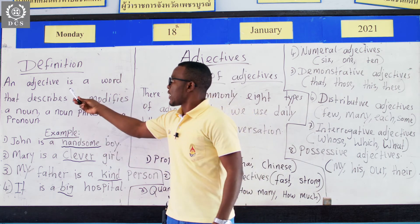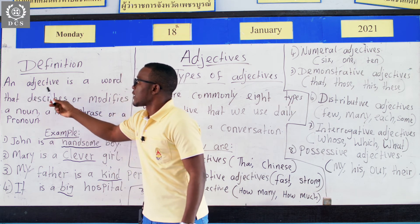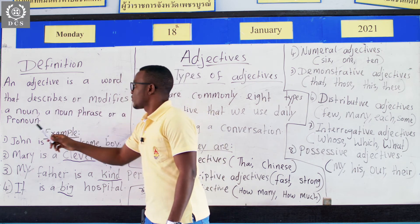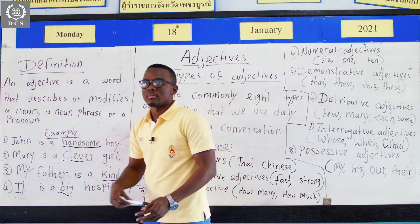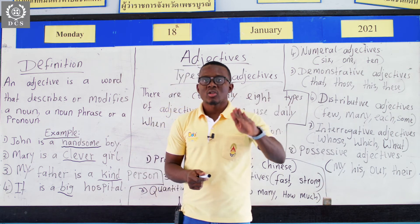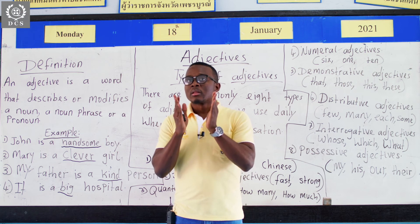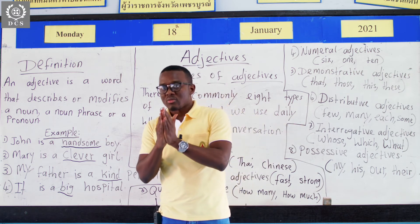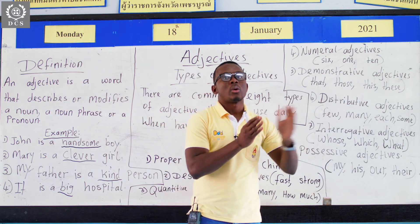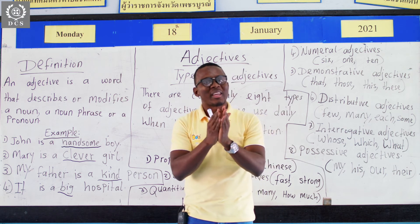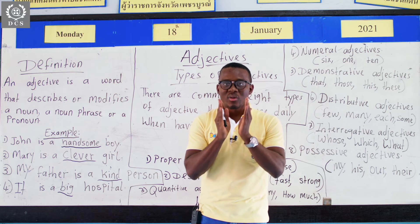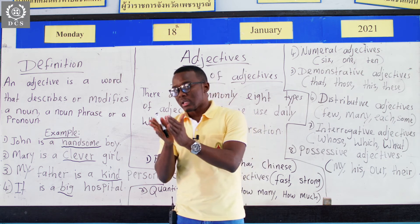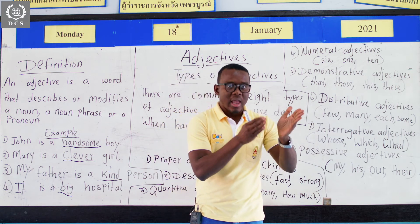Let's look at the definition over here. An adjective is a word that describes or modifies a noun, a noun phrase, or a pronoun. In our previous lesson, we mentioned about adverbs. Adverbs describe or modify verbs. Adverbs describe or modify verbs and adjectives. So let me go over it one more time: adverbs describe or modify verbs and adjectives, while adjectives describe or modify nouns and pronouns.